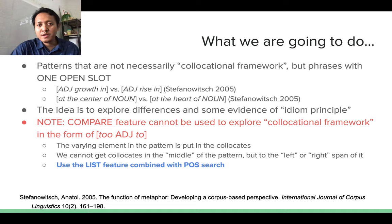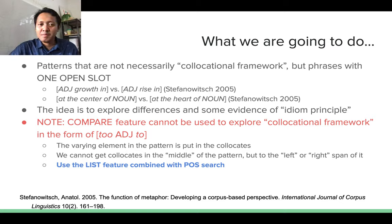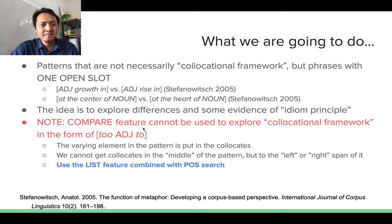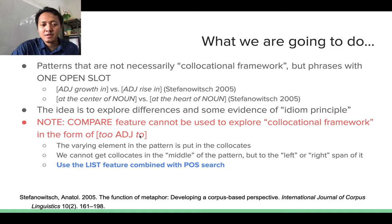This accommodates the architecture of the compare feature in COCA, where you can only contrast collocates of words where the collocates occur either to the right or to the left. We will do the same with phrases here. If you want to look at what adjectives typically fill a frame in the middle, you could do that in the list feature when you combine a part-of-speech search with a specific word search.